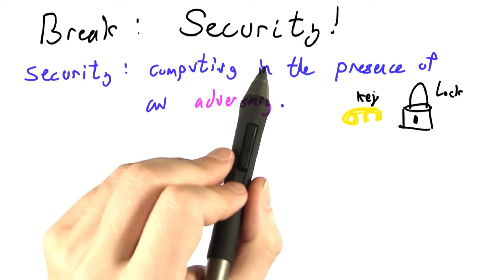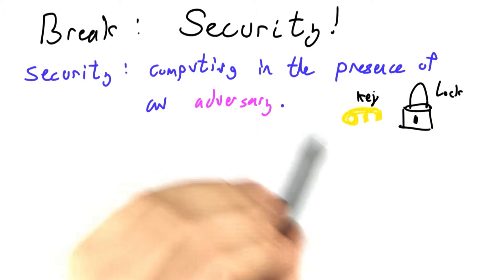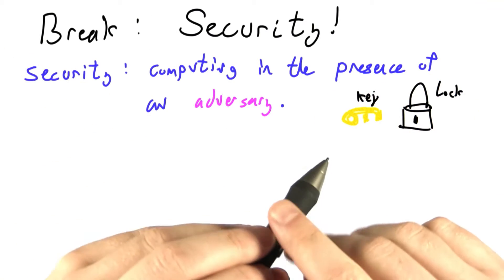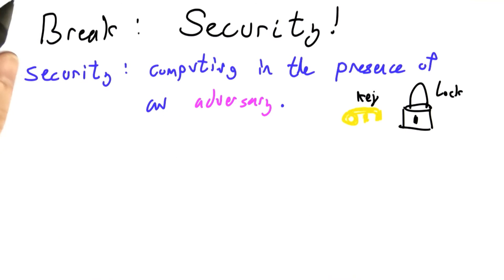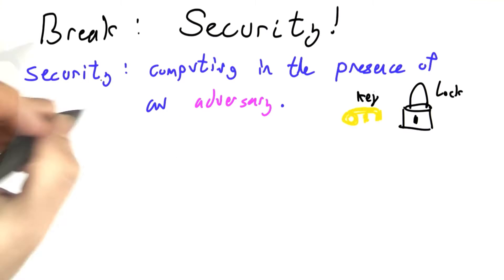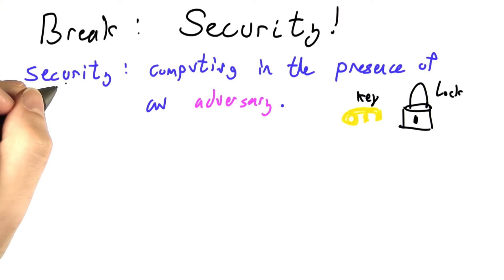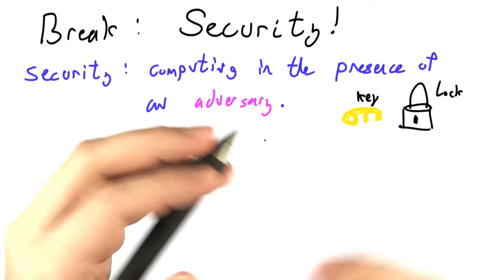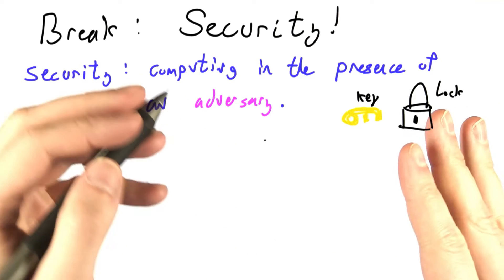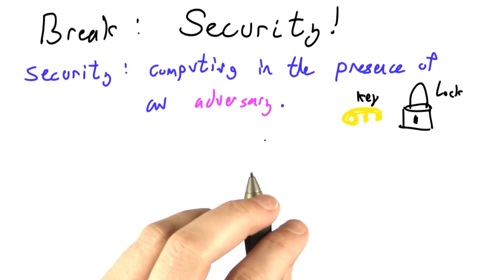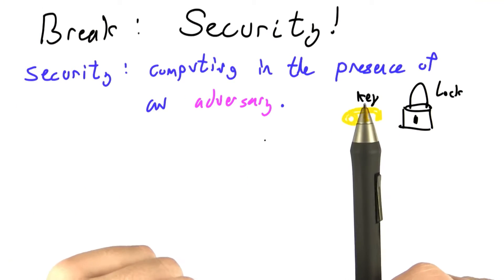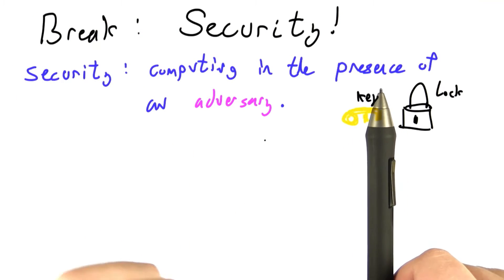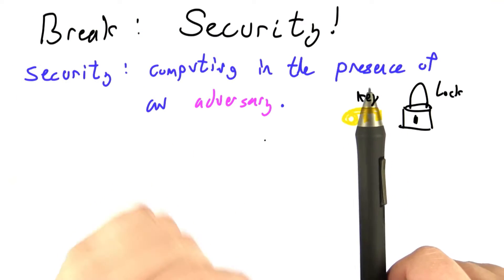Let's take a break and talk a bit about computer security, a topic we really haven't touched on much in this unit so far. Security can sometimes be defined as computing in the presence of an adversary — someone else using a computer or a network or resources who means you harm or hopes to exploit or take advantage of resources that you've put out there.